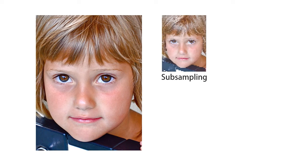A simple method for downscaling is taking a subset of the colors in the original image. This, however, leads to disturbing artifacts such as jaggy edges and distorted structures.